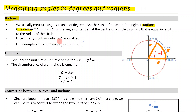Often, the symbol for radian is omitted. So the superscript c or 'rad' notation is usually left out — we don't write units for radians. For example, 45 degrees is written as π/4, rather than π/4 with the unit symbol. When we're talking about radians, we don't tend to use units.